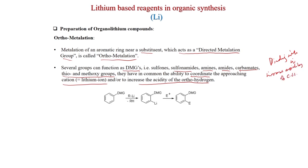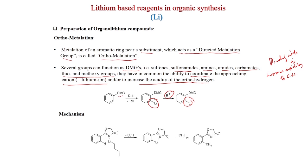If a DMG group is present in the phenyl ring, treatment with R-Li will cause ortholithiation; the resulting phenyl lithium compound can then be treated with different electrophiles to incorporate the electrophilic group at the ortho position. For example, with an oxazoline acting as the DMG, treatment with n-butyllithium gives butane and the stabilized lithium intermediate (also stabilized by the nitrogen), and subsequent methyl iodide treatment installs a methyl group on the aromatic ring.